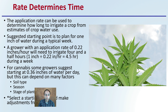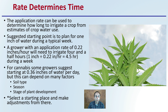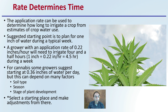The rate determines the time. The application rate can be used to determine how long to irrigate a crop based on estimates of crop water usage. A suggested starting point is to plan for one inch of water during a typical week — that's the starting rate for cannabis, and you can increase or decrease from there. A grow with an application rate of 0.22 inches per hour will need to irrigate four and a half hours to reach that one inch per week.